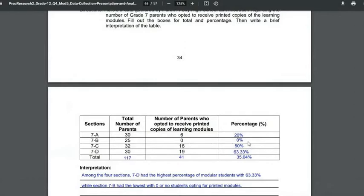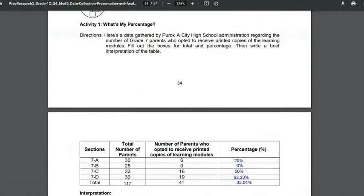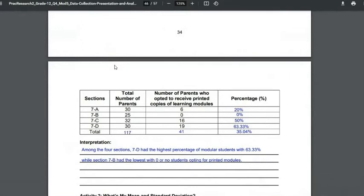So these students are modular. All you have to do is get the percentage per row. So 30 and 6: 6 divided by 30 times 100 percent is 20 percent. Apply it all the way down—that's 20 percent. Section 7B had no modular students. Section 7C had 50 percent, and section 7D had 63.33 percent. Total number of parents are 117, and 41 opted to get modules, so the rest may be synchronous and asynchronous. With that, you need to fill the box and write a brief interpretation.